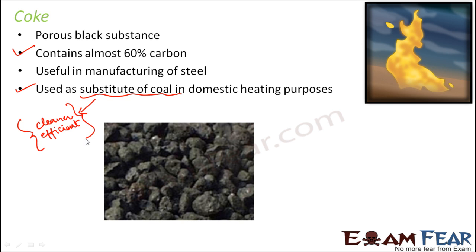Coke can also be used to produce different gases. When hot steam is passed over coke — which is essentially carbon — the hot water vapor reacts with the carbon to form carbon monoxide and hydrogen. This mixture of carbon monoxide and hydrogen is called water gas. So coke acts as a starting material for preparing both coal gas and water gas, which is another advantage of coke.